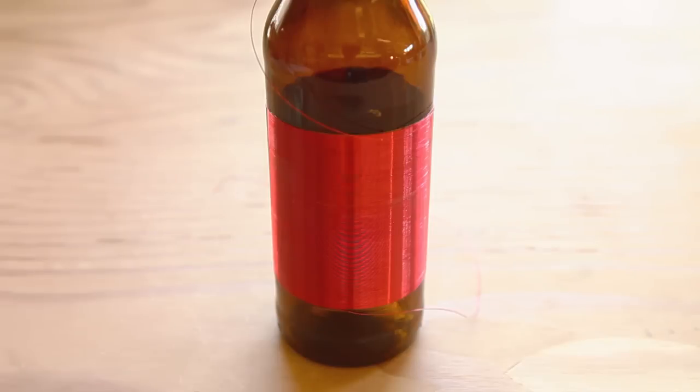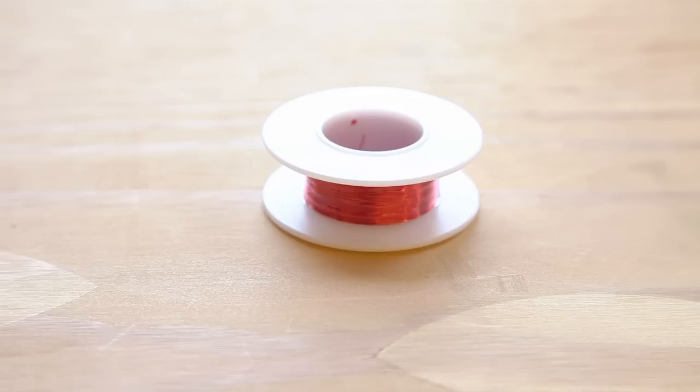First, we need to wind our wire around our bottle, which will provide us with our tuning coil. For this, we'll be using 30 gauge magnet wire, the red spool. Remember, in American wire gauge standard, the higher the gauge number, the thinner the wire. 30 gauge wire is 0.01 inches in diameter. This spool contains 200 feet of solid enamel coated wire, and yes, we will be using all of it.